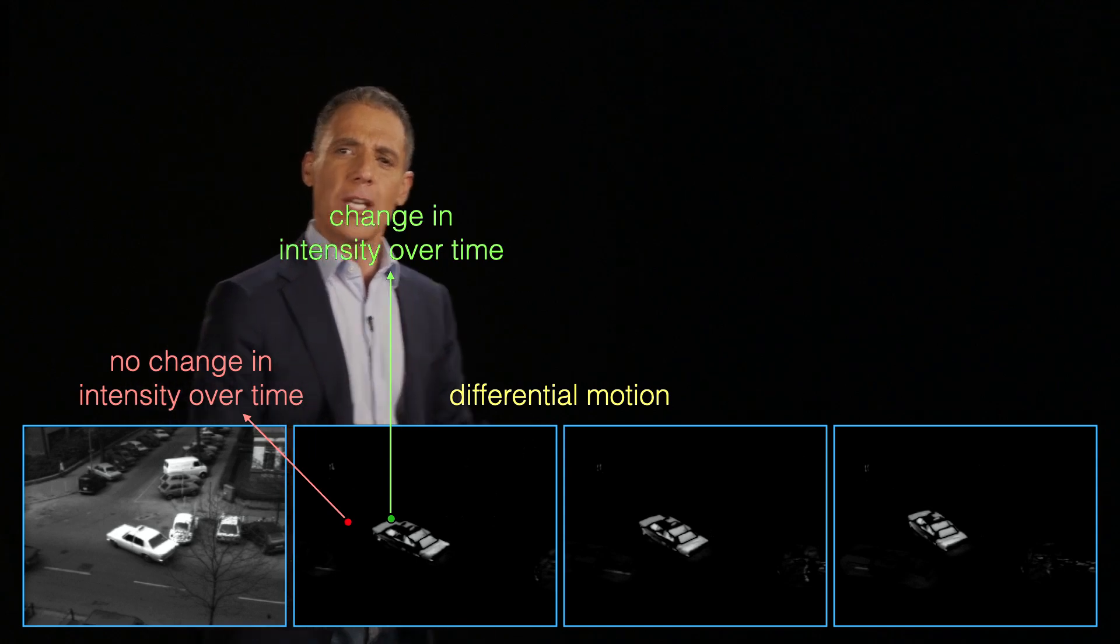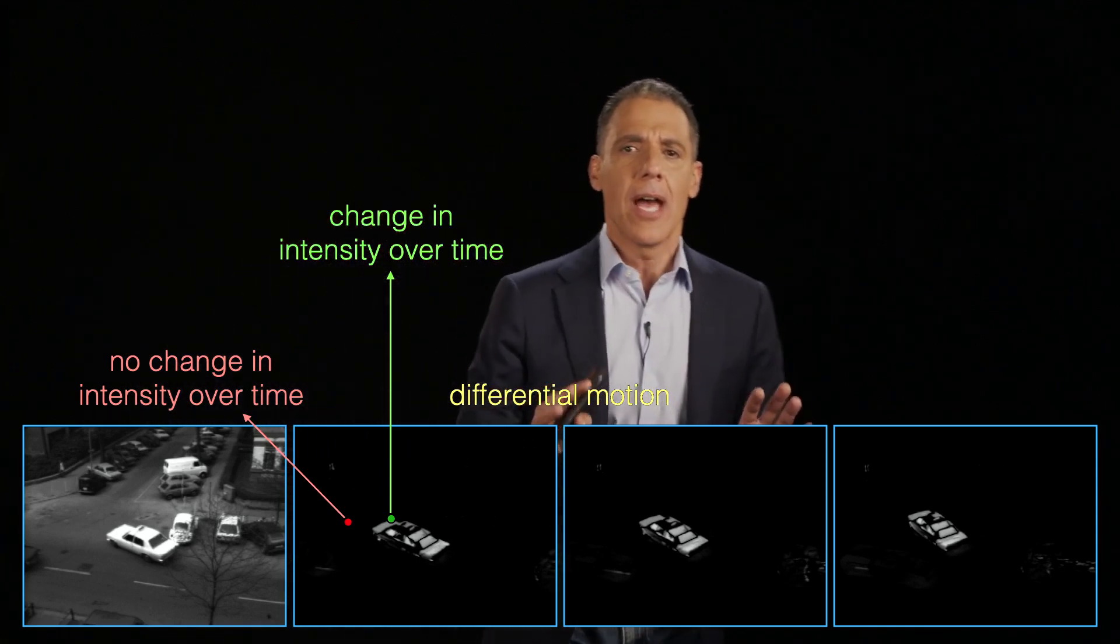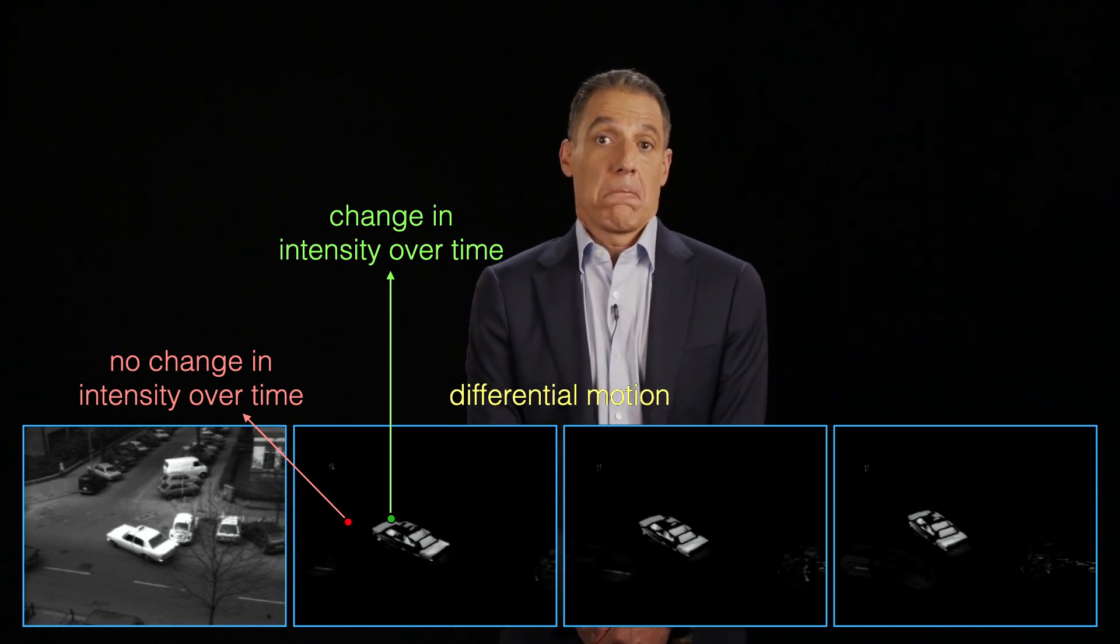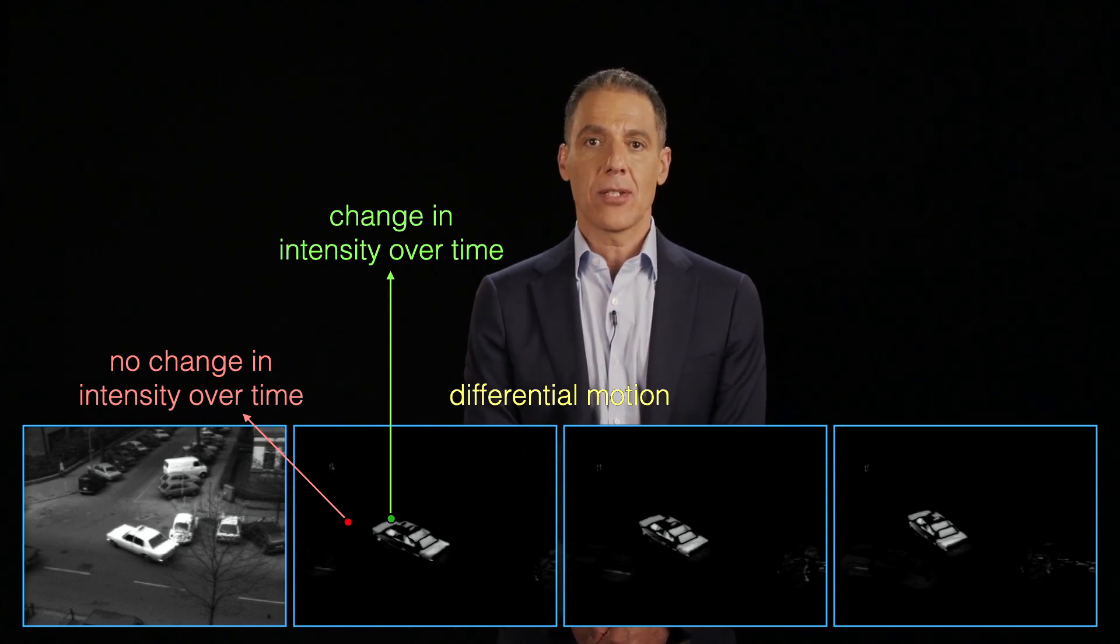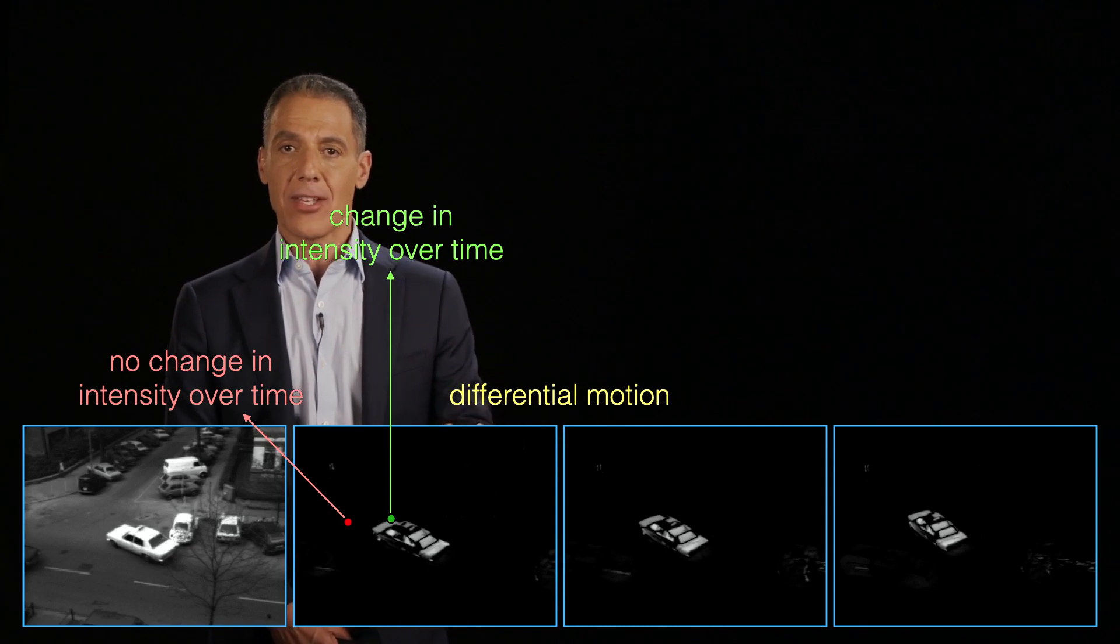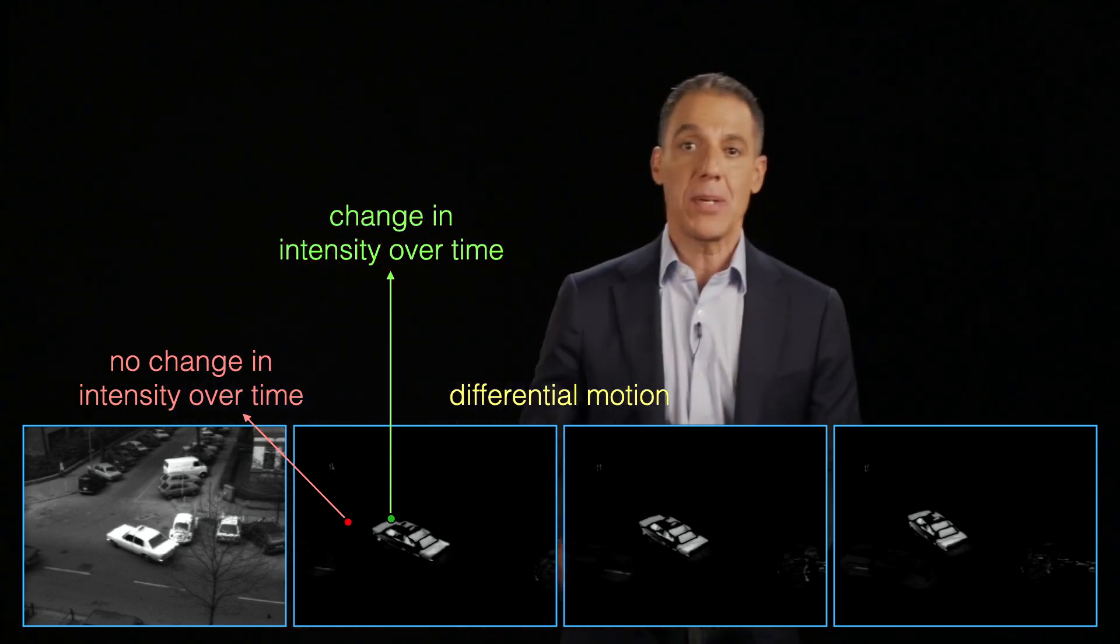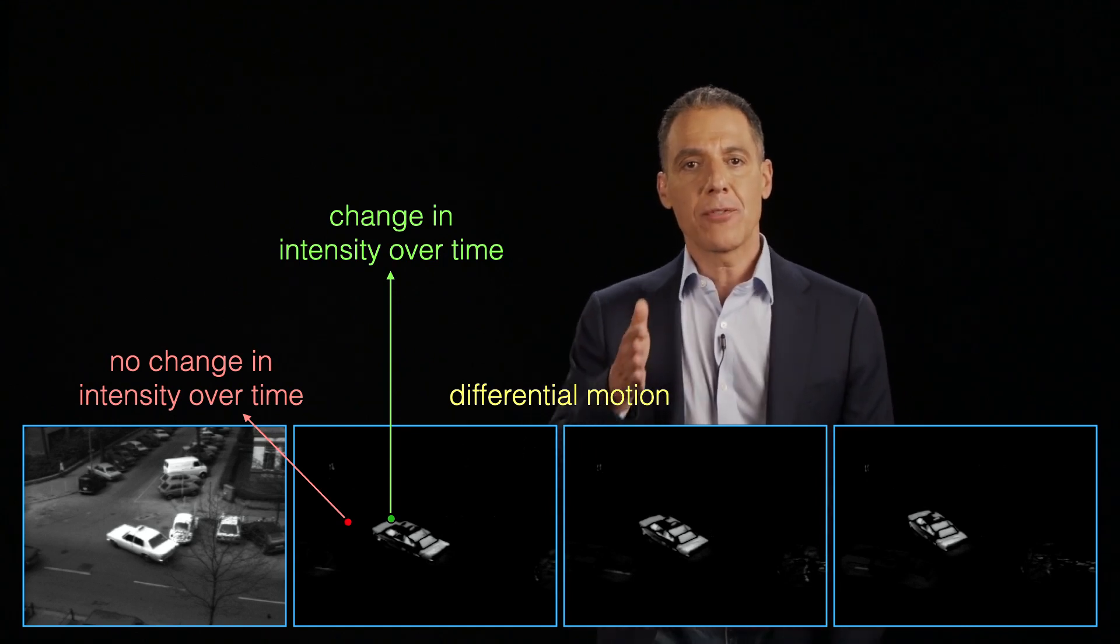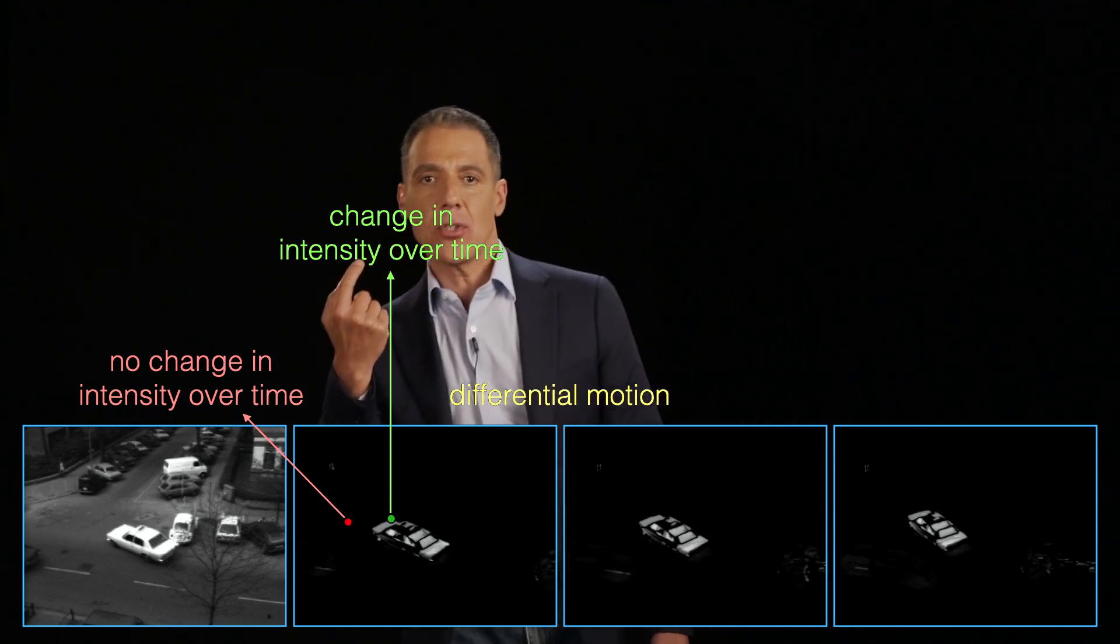Here what I'm showing you is the difference between neighboring frames. And what do you notice is that where there was motion, there is a bright spot. And where there's not motion, it's exactly the same. Why is that? So think about two frames. I'm going to stand really still right now. And imagine looking at two frames of this video and differencing them. They would be black. Nothing changed.